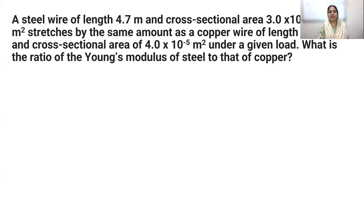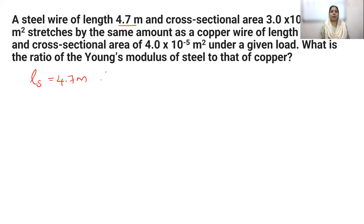Let's go to questions. A steel wire of length 4.7 meter — the steel wire length is given as 4.7 meter, and area of cross-section of steel is 3 into 10 raised to minus 5 meter square.